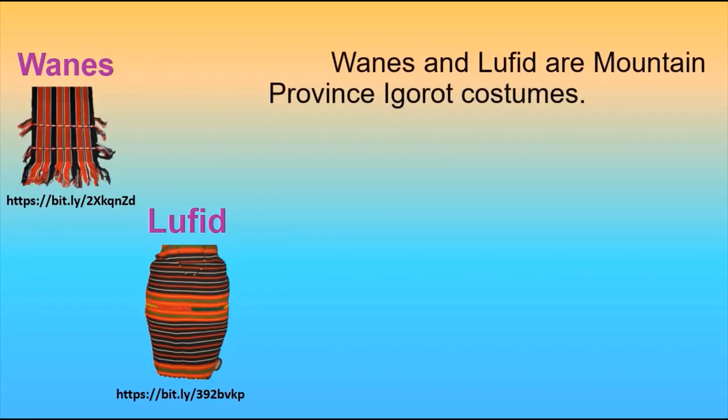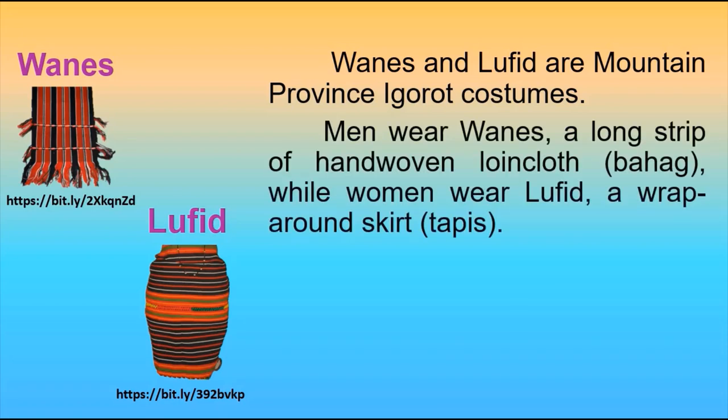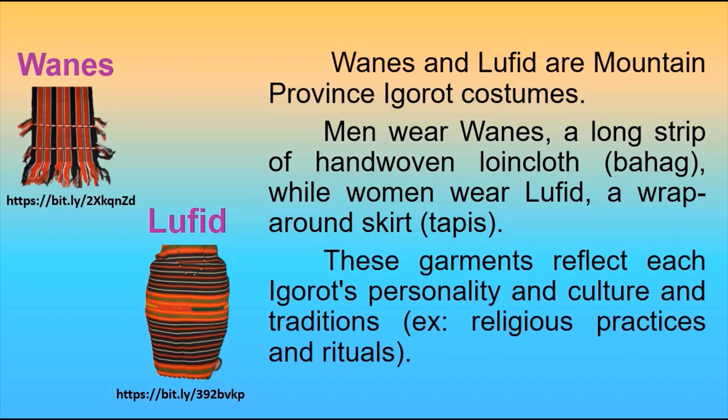Wanis and Lufid are mountain province Igorot costumes. Men wear wanis, a long strip of handwoven loincloth or bahag, while women wear lufid, a wraparound skirt or tapis. These garments reflect each Igorot's personality, culture, and traditions, including religious practices and rituals.